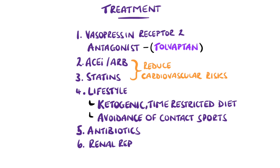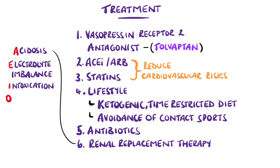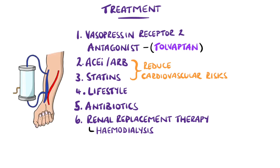As the disease progresses, renal replacement therapy may be considered, where the function of the kidney is replaced by other methods. The mnemonic AEIOU can help you remember general indications, such as severe acidosis or electrolyte imbalances, intoxication including drugs or medication, fluid overload, and uraemic symptoms. This could be extracorporeal dialysis, like haemodialysis or haemofiltration, where blood is taken out of the body and undergoes diffusion or filtration in another machine before being returned to the body.